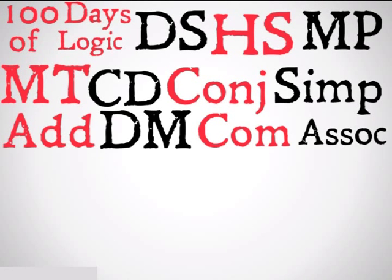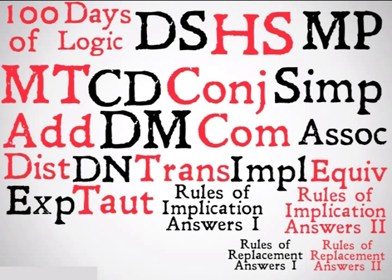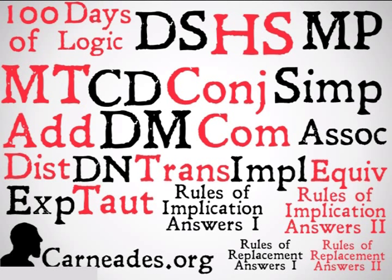That was associativity. We're going to represent that with ASSOC, probably because we don't want to write something shorter like ASS. Next up is distribution, double negation, and many more. Watch a new video every single day for 100 days here at carnades.org, and stay skeptical, everybody.